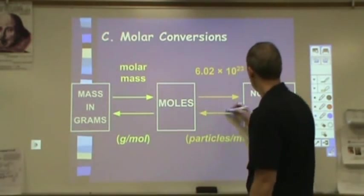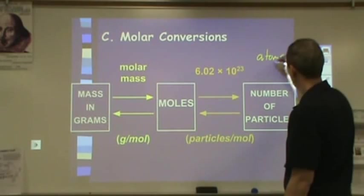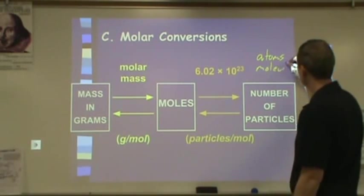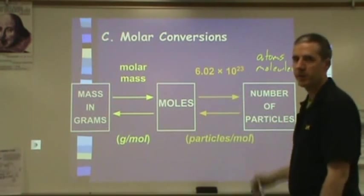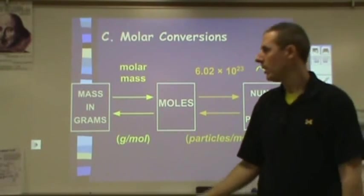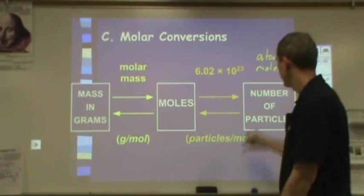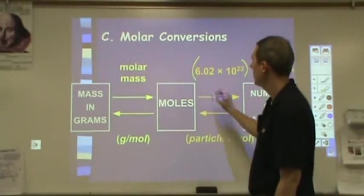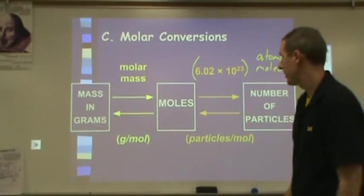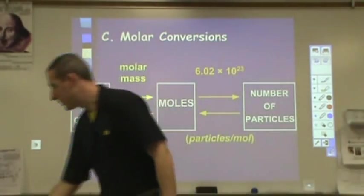If you're changing moles into numbers of atoms or molecules or formula units, you're going to multiply by 6.02 times 10 to the 23rd. If you're going to go in the reverse direction, you're going to divide by that number. Of course, if you're dividing by something with scientific notation, you would want to put parentheses around. Let's look at some examples.